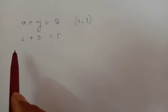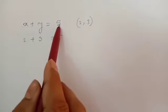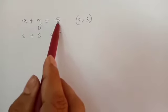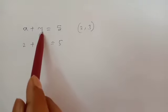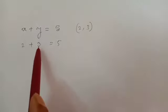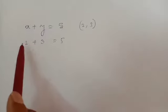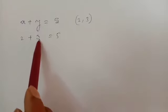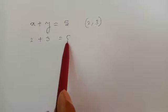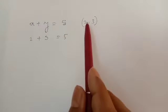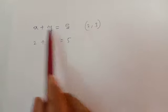Suppose we have a linear equation: x plus y equal to 5. In place of x we are taking 2 and in place of y we are taking 3. Now solve this — you can see that the left hand side becomes equal to the right hand side. So you can say that the values of x and y satisfy the equation.